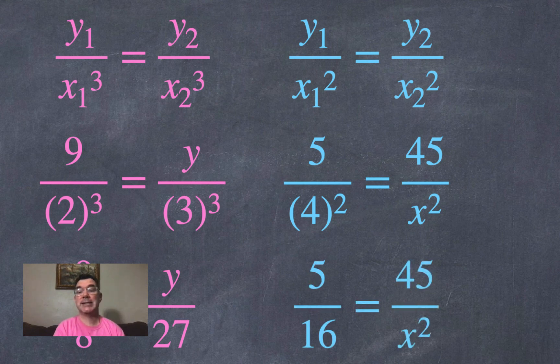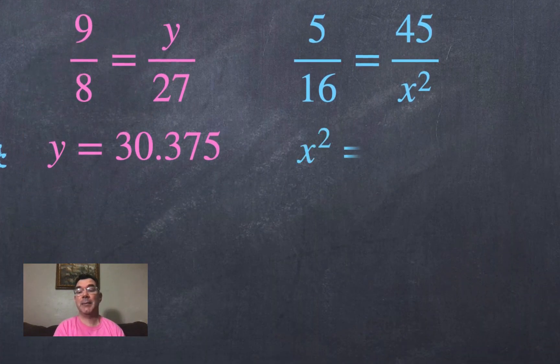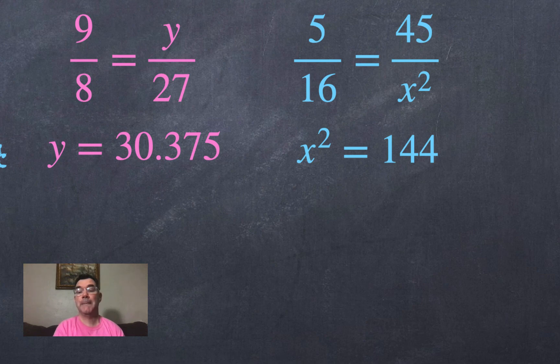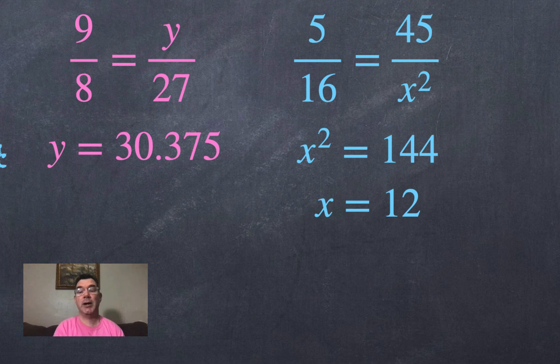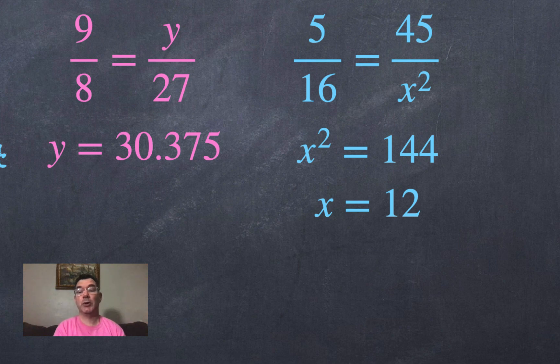So 4 squared is 16. Nothing else needs to be simplified. But I can cross multiply and get that x squared would equal 144. So x would have to be 12 for that. I know that when you're solving a square, you would get plus or minus 12 as your values for x. But if you're looking at that proportion, all of the values are positive. So x would have to be 12 in this case.